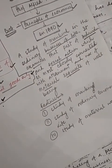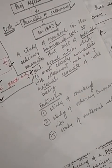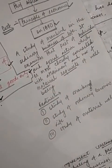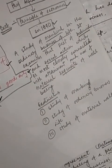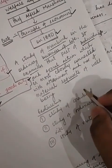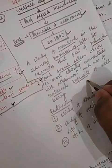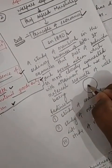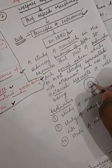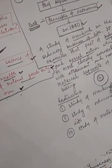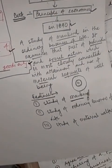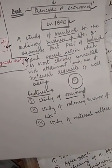On one side it is a study of wealth, and on the other, more important side, it is a part of the study of man. Therefore, according to Marshall's viewpoint, man is in the center — it is the study of human beings, it is the study of mankind. The features of Alfred Marshall's definition: it is the study of mankind, meaning it talks about individual persons.